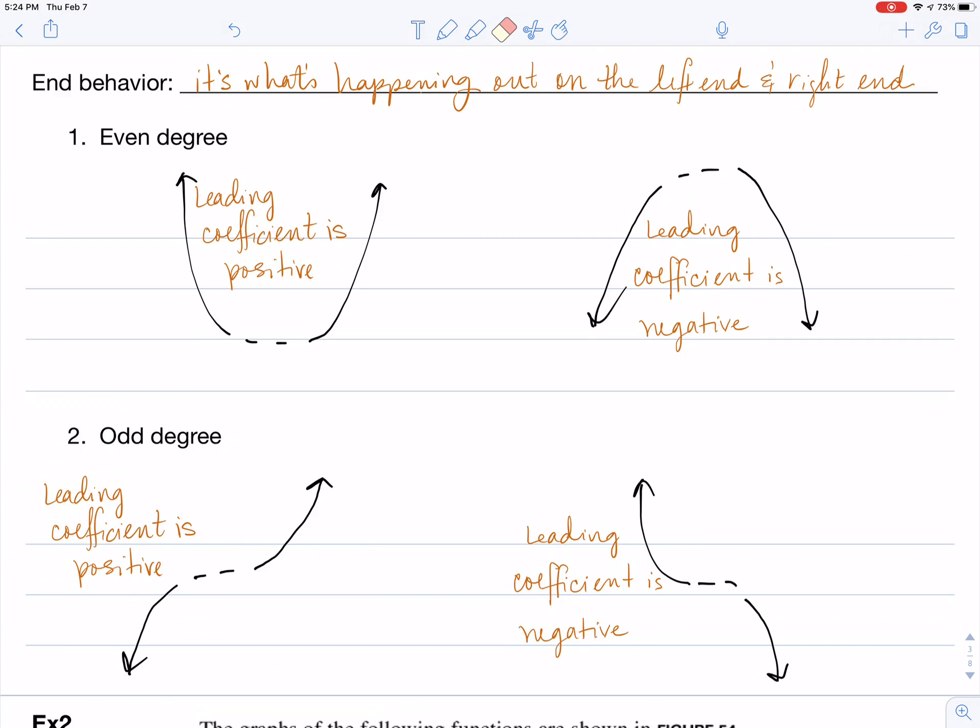So your embedded question for this particular video is going to be the following. If you have a degree of 172 and the leading coefficient is negative, draw me a picture of the end behavior. If you have a degree of 43 and the leading coefficient is positive, draw me a picture of what the end behavior would look like.